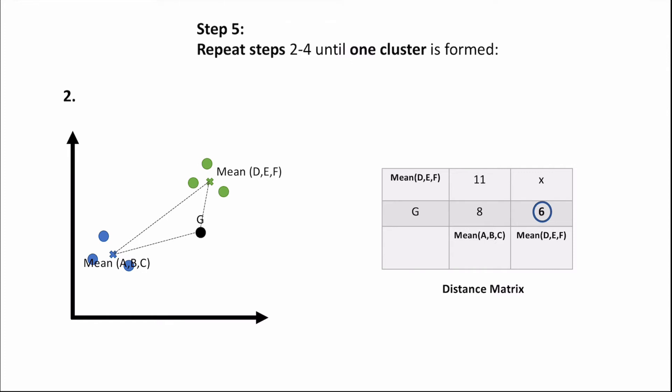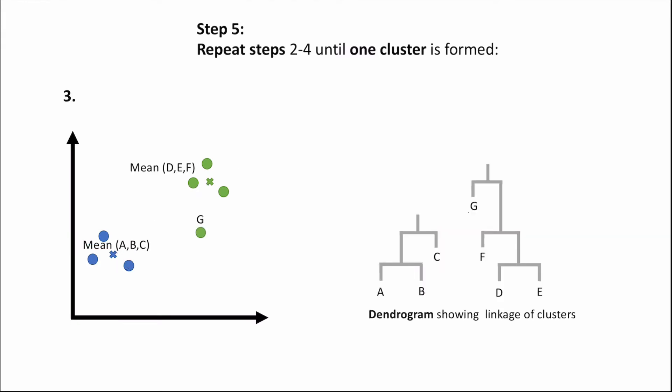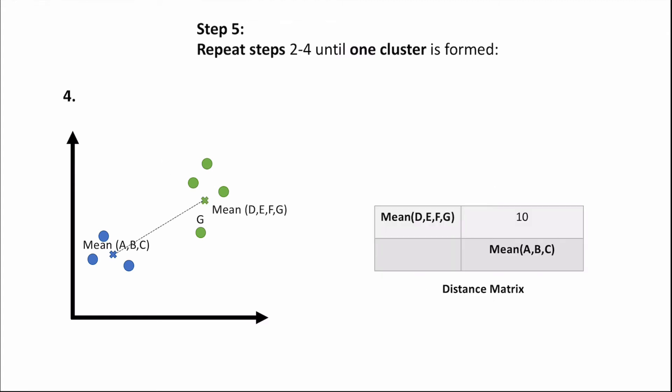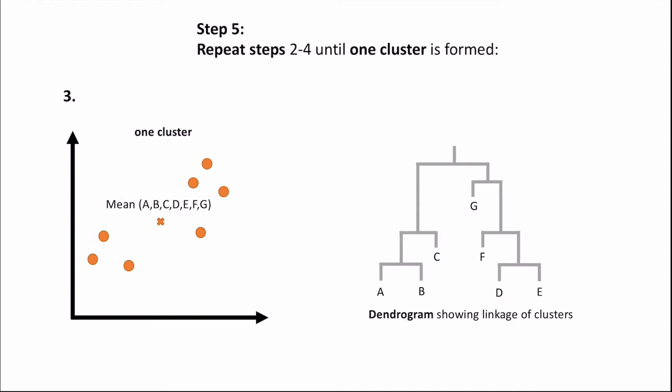Going back to step two again, we identify the clusters closest to each other and for step three we link them together. Here, point G has been linked with the cluster containing F, D, and E. For step four, we calculate the distance each cluster's mean point is away from each other. Since there is just one distance remaining, it must be the smallest, and linking these final two clusters together we obtain a single cluster and move on to step six.